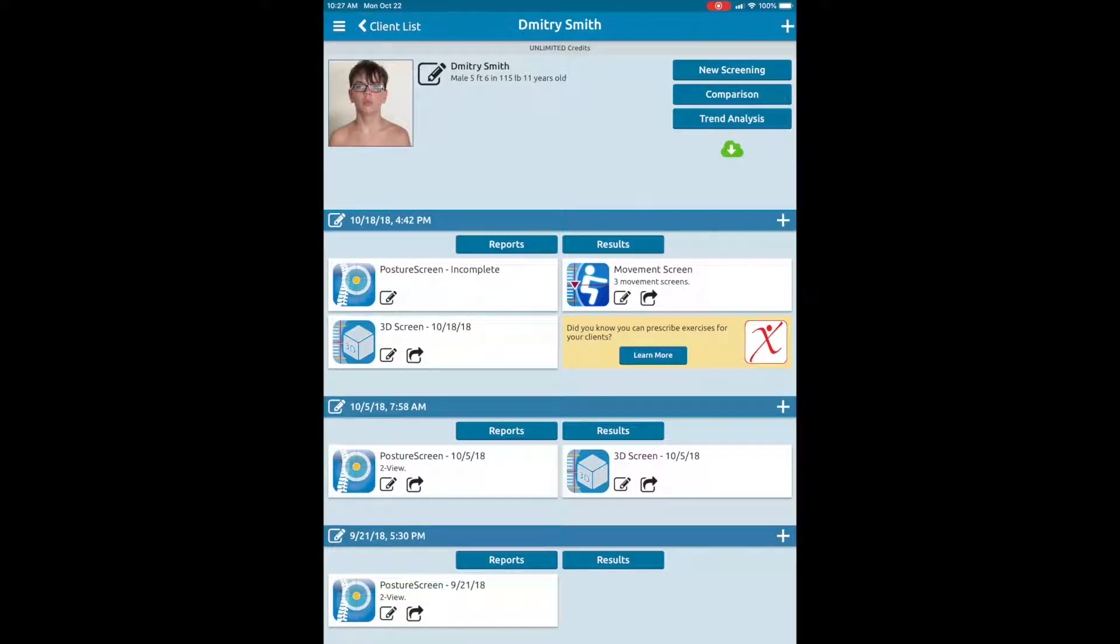The first thing is that the new additional measurements called cranial vertebral angle which is CVA, flexion extension of the skull, thoracic kyphosis, Q angle, and pronation supination of the foot are to be turned on in settings.